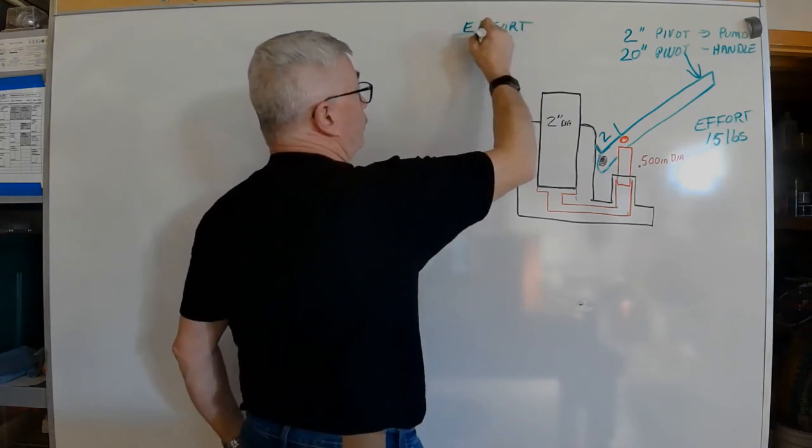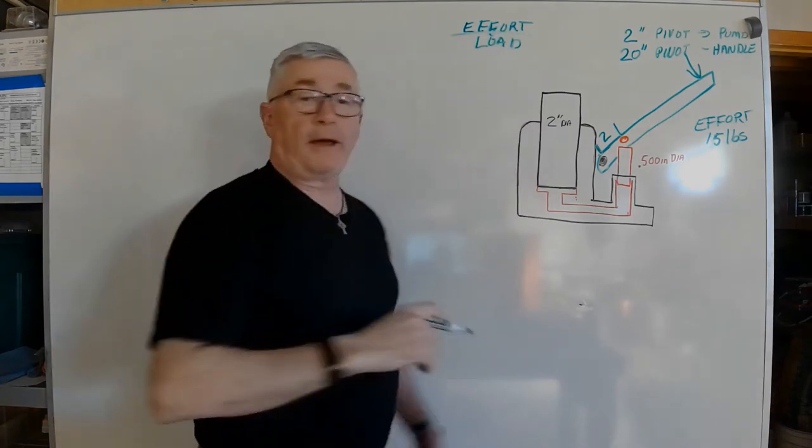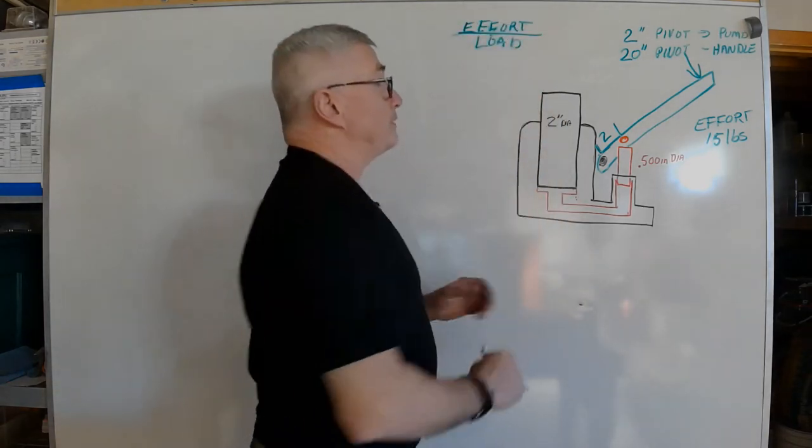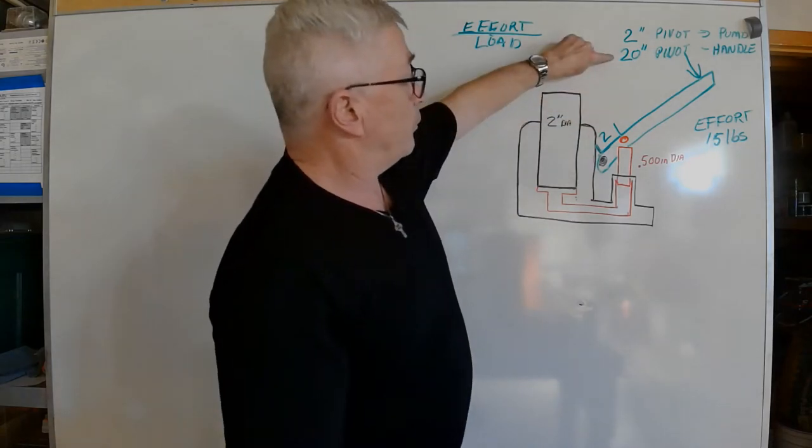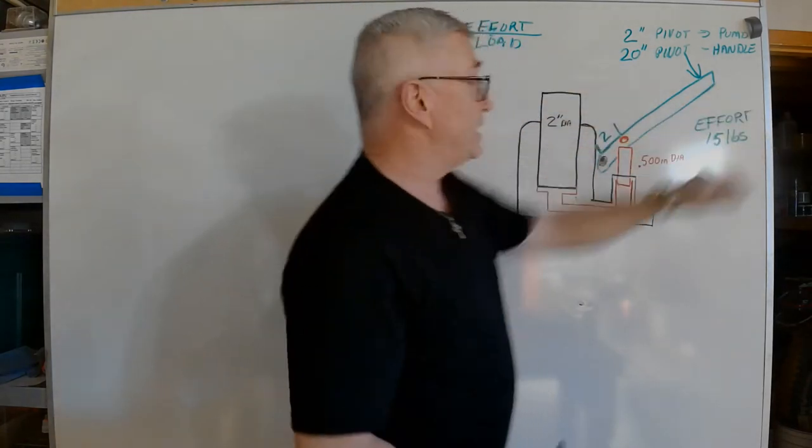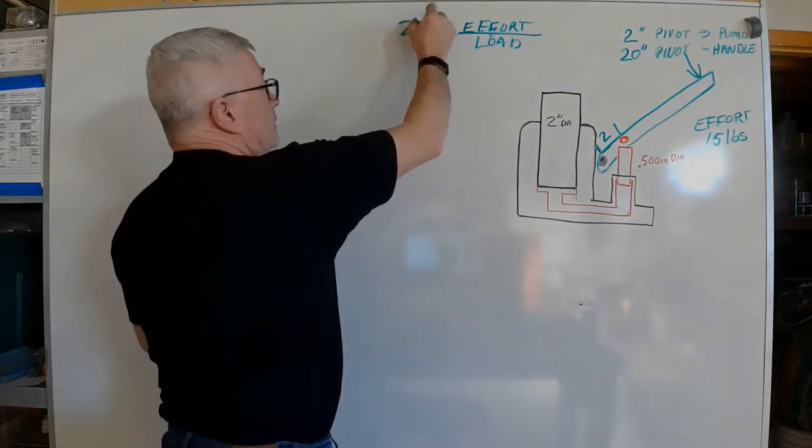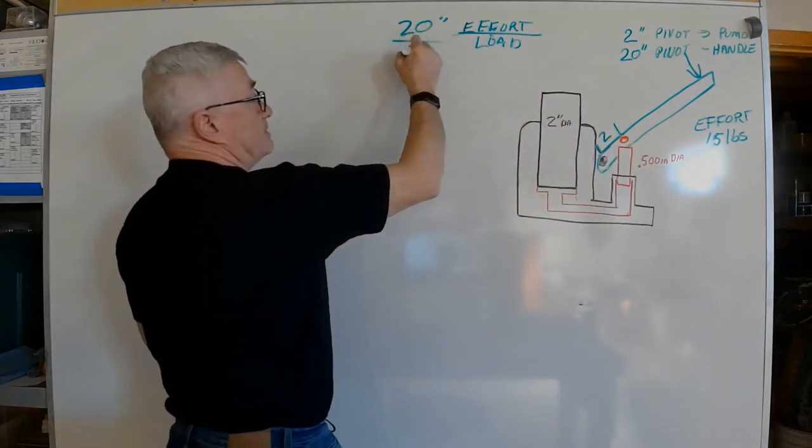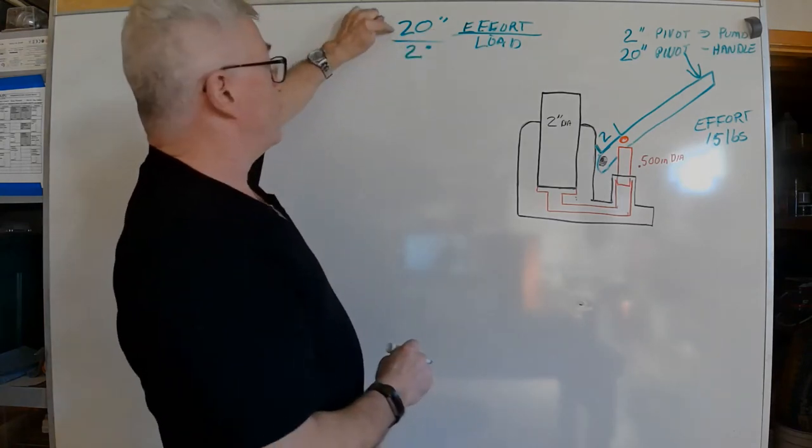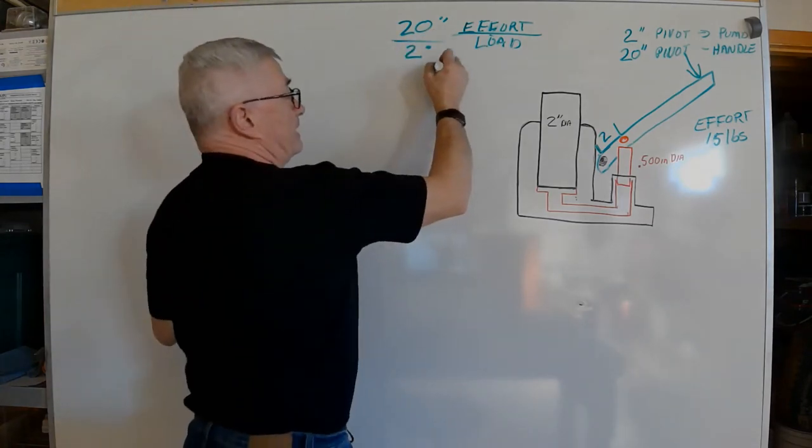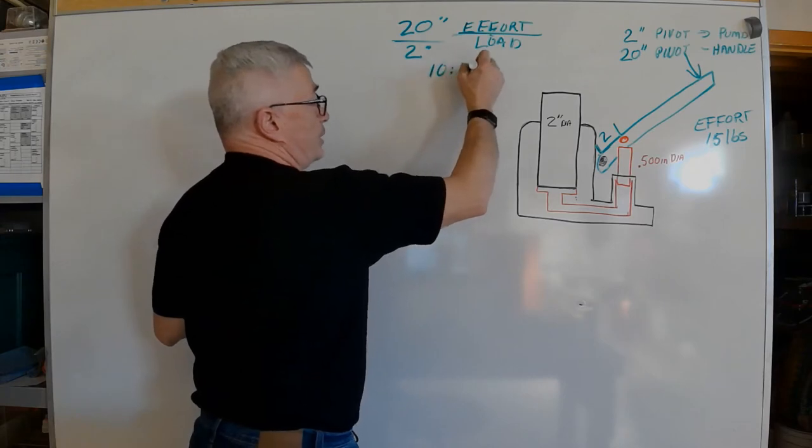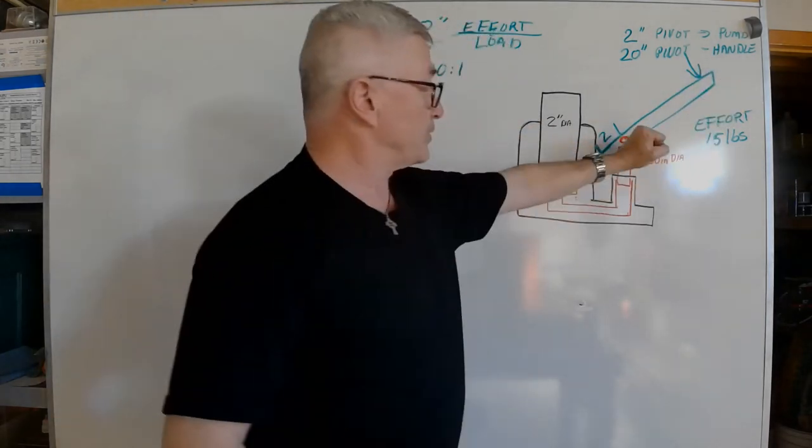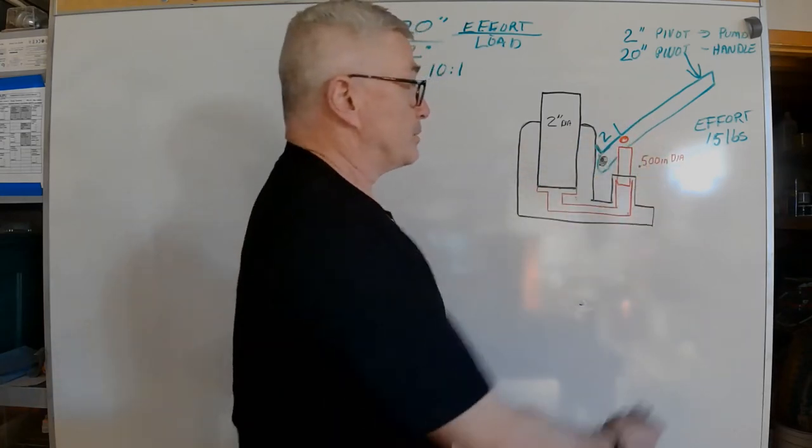I've kept the numbers pretty simple so we don't have to get really involved in a whole lot of math. My effort length was 20 inches, my load length is 2 inches. Do the math: 20 divided by 2 gives me a 10 to 1 ratio.